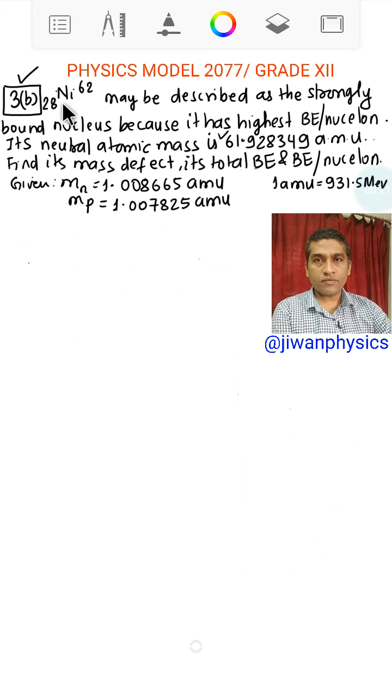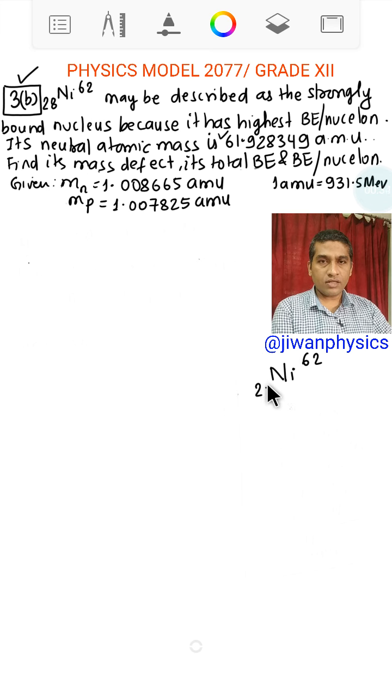We have nickel. Let me write over here Ni and the mass number for Ni is 62, and atomic number Z is 28.